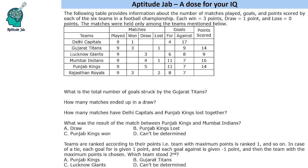There are six teams that played in a football tournament and we are given some data which is partially filled. We are given the number of matches played for each of the teams, which is nine for all, along with wins, draws, losses, goals for, goals against, and points scored. Each win results in three points, a draw gives one point, and a loss gives zero points. We have to answer the questions based on this information.